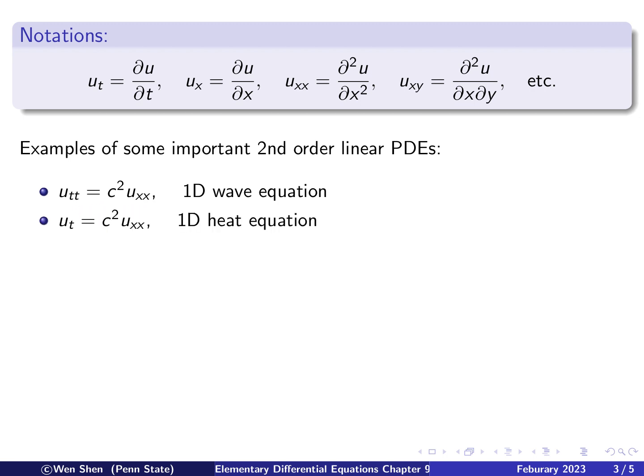And the second one is u sub t equals c squared u_xx, where c is a constant. So this is a 1D heat equation. And the third one is the famous 2D Laplace equation, which is u_xx plus u_yy equals zero.